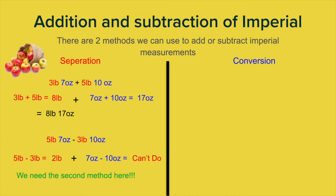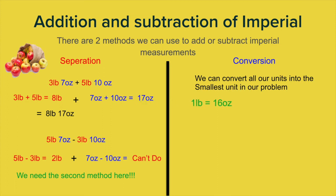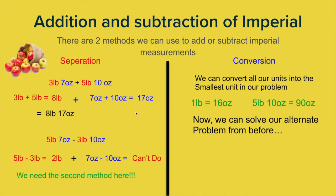The second method is called conversion. Conversion is about converting our units into the smallest units in the problem. We know that one pound is 16 ounces — there are 16 ounces in one pound. So if we have five pounds and ten ounces, and we convert everything to ounces, five pounds and ten ounces gives us 90 ounces altogether. Now we can use this to solve our subtraction problem.